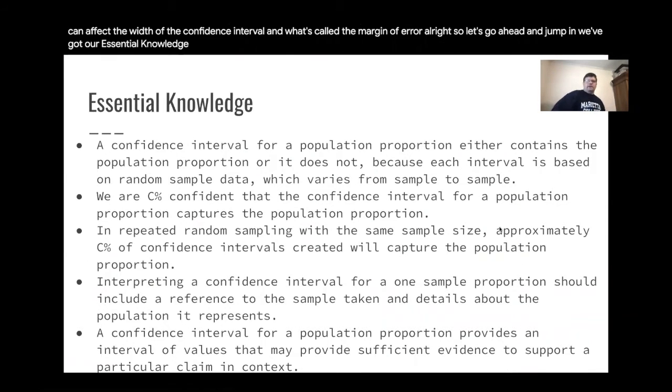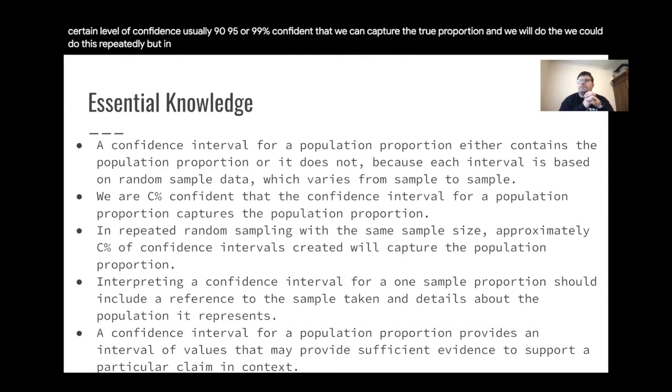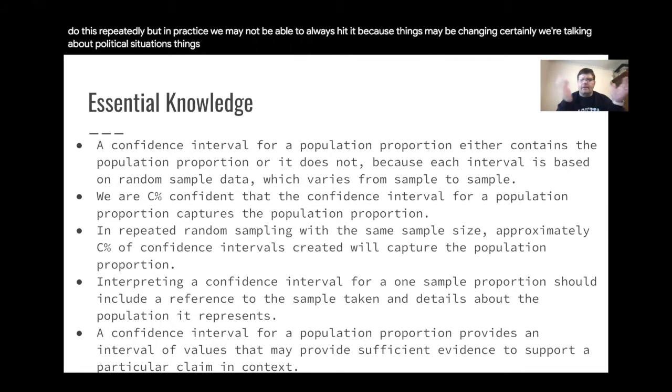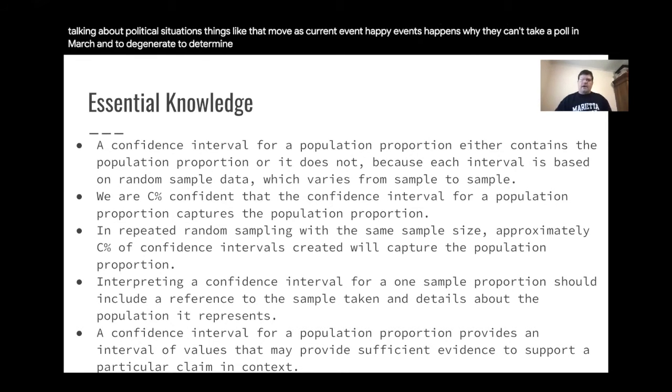We've got our essential knowledges here. The confidence interval contains or doesn't contain the true proportion. It's based on a random sample and we will have a certain level of confidence, usually 90, 95 or 99% confident that we can capture the true proportion. We could do this repeatedly, but in practice, we may not be able to always hit it because things may be changing. When we talk about political situations, things move as current events happen. It's why they can't take a poll in March to determine what's going to happen in December.